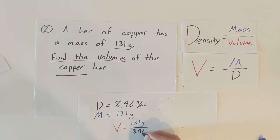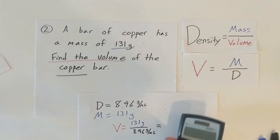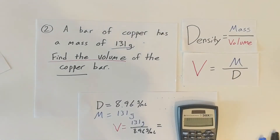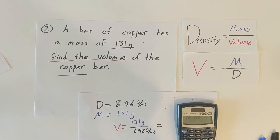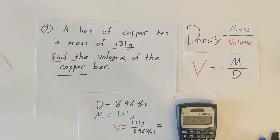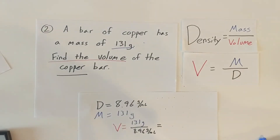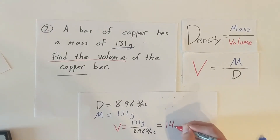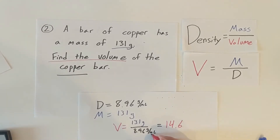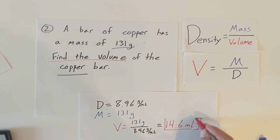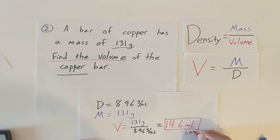Volume equals 131 grams divided by 8.96 grams per milliliter. Let's plug this into the calculator: 131 divided by 8.96 gives us 14.6. The units are milliliters — that is the volume of the copper bar. You can also say centimeters cubed.